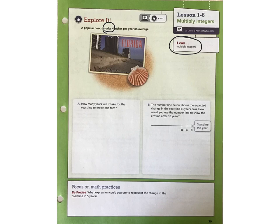Erosion is a type of wasting away. In other words, the beach is disappearing 4 inches per year on average. Question A says, how many years will it take the coastline to erode 1 foot?